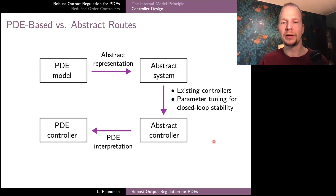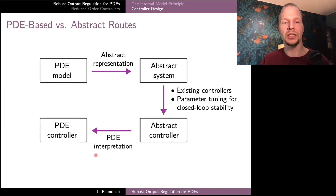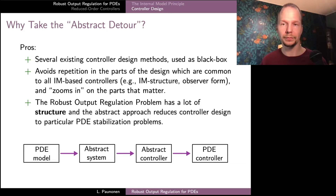After applying our abstract controller design, we are left with a controller which is also an abstract system living on some infinite-dimensional vector space. If our goal is to get a PDE-type controller, we still need some kind of interpretation to convert our abstract controller into a system with PDE dynamics. Visually the abstract route seems a little bit longer, so it's a relevant question what kind of benefits and disadvantages this has compared to designing controllers just for individual PDE models.